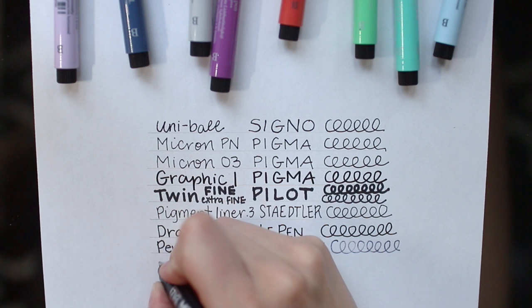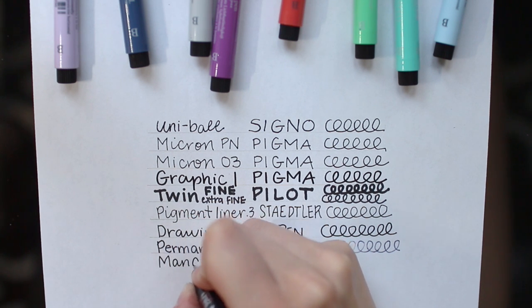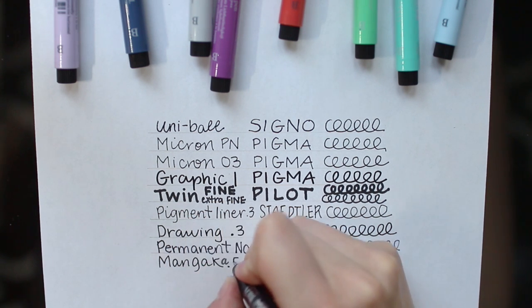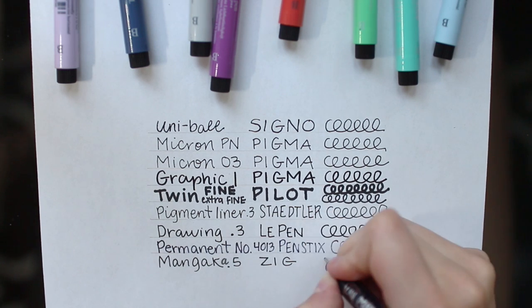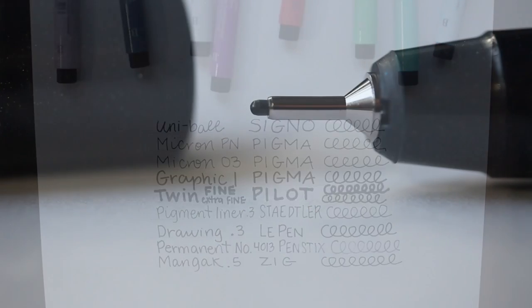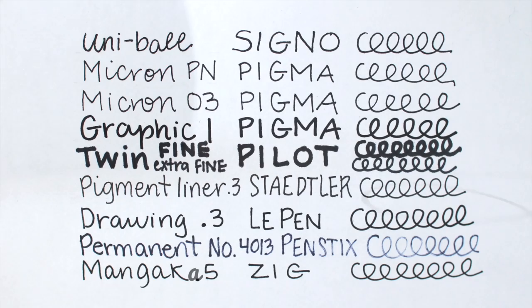This last pen is probably my favorite. It's the Kuretake Zig Cartoonist Mangaka Outline Pen in size 05. I just really like the feel of this pen. It's a 0.5 millimeter felt tip. It's very firm, it draws nice and smooth, and the actual pen just feels nice in the hand. Because it's water based, it's not going to bleed at all, which makes it perfect for working in a journal.